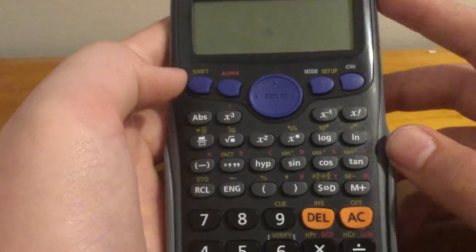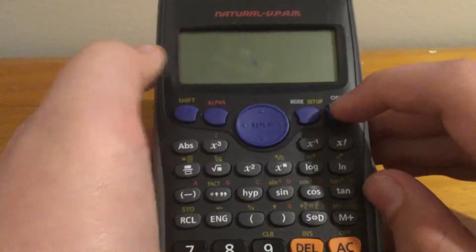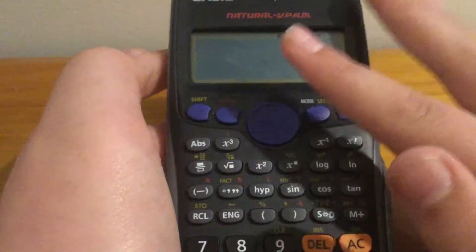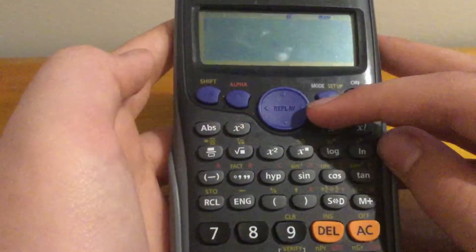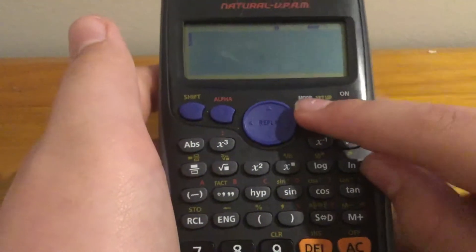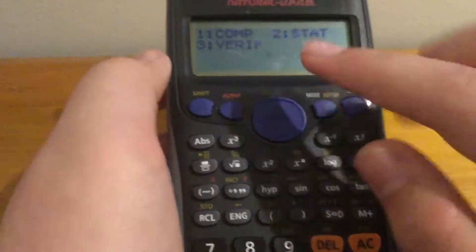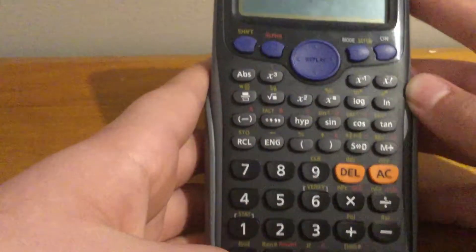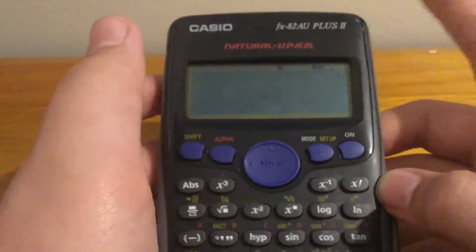After that, you go Shift, On, and it should turn on to give you a blank screen. After that, you're going to press Mode Setup. You see Comp is short for computation. So just press 1, and now we're in computation.